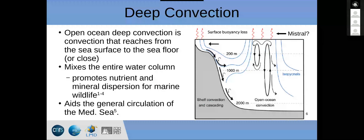How does this affect deep convection? Open ocean deep convection is basically a convective system that reaches from the sea surface to the seafloor or near it, essentially mixing the entire water column. Because it mixes the entire water column, it moves around a lot of minerals and nutrients so marine wildlife can tend to explode after a deep convection event. It also aids in the general circulation of the Mediterranean Sea. There are two forms of dense water formation: open ocean convection and shelf cascading, both of which happen in the Gulf of Lyon, but I'm focused on open ocean convection.